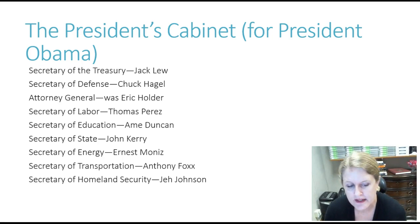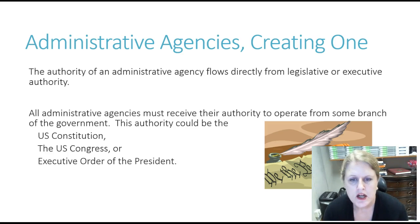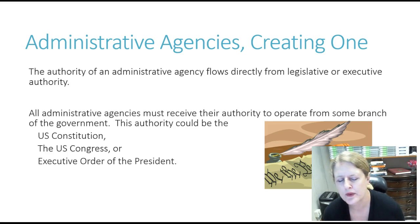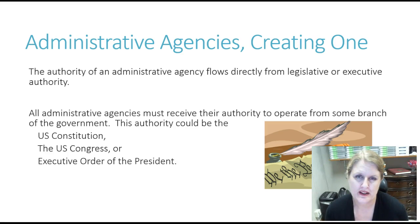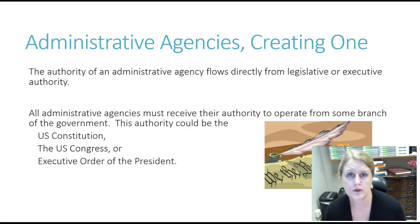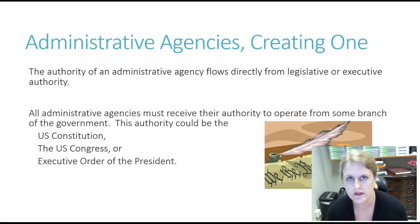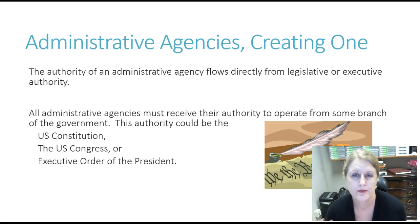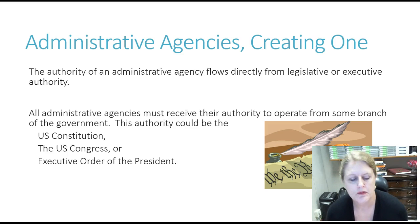Even the President's Cabinet, for instance, is semi administrative. So where do these government agencies get their authority? They get it from either the US Constitution, Congress, or an executive order of the president, and then they handle our day-to-day life kind of things. So we've got the Franchise Tax Board, which is the state of California, and the Internal Revenue Service, which is federal. They can be on national, state, or local levels, and we deal with them all the time.